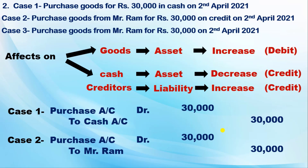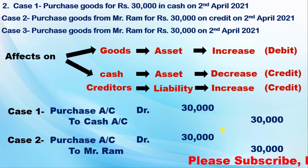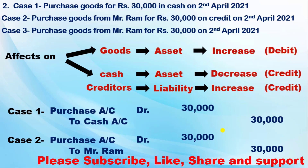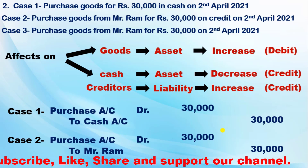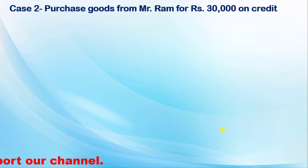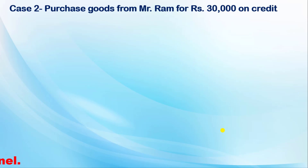In Case 3, where no mention is made of cash or credit but a person's name is given, you assume it is a credit purchase. So the treatment will be the same as Case 2.